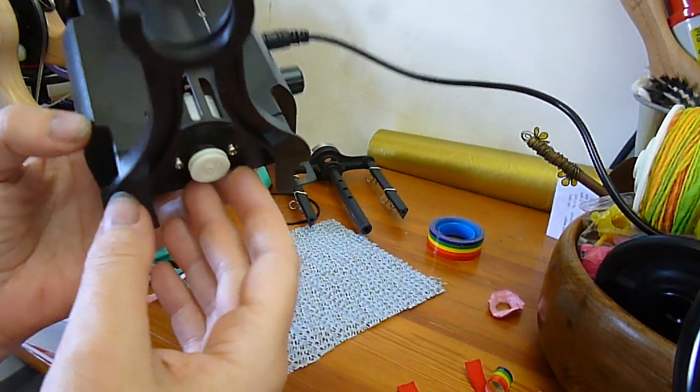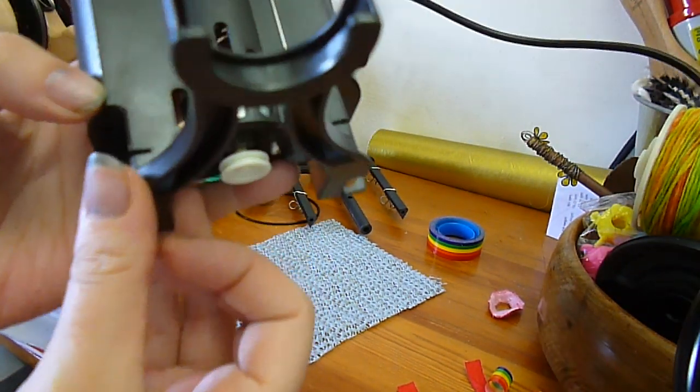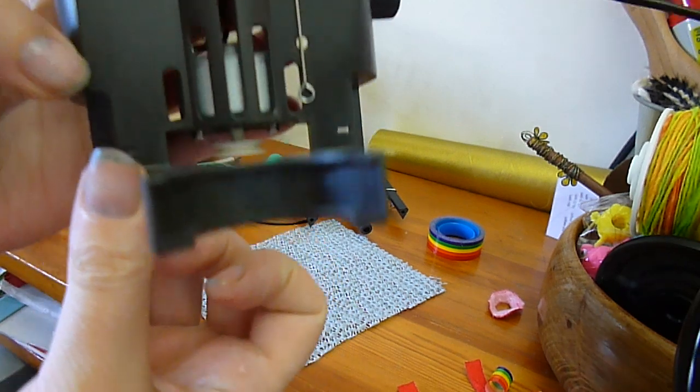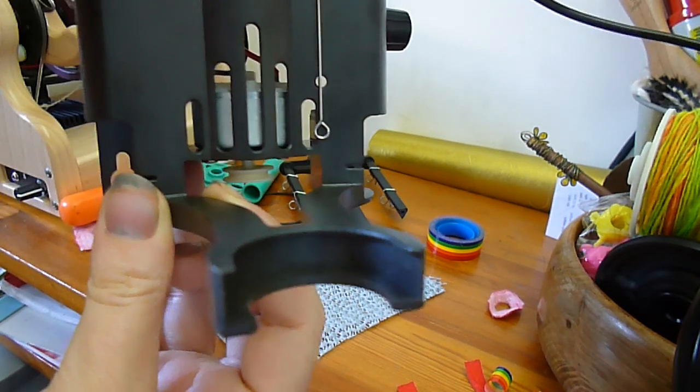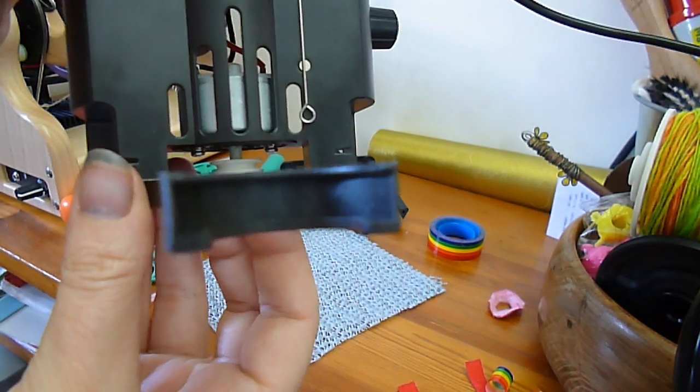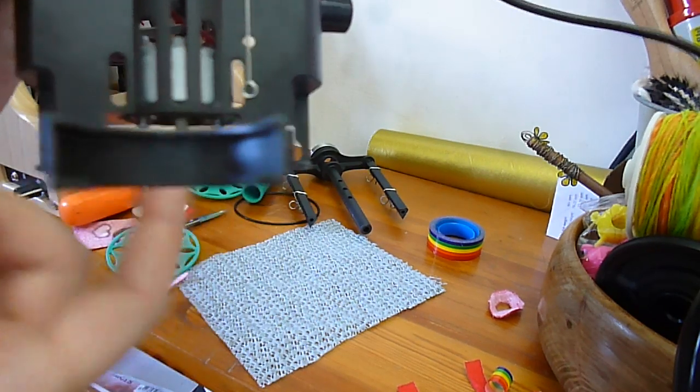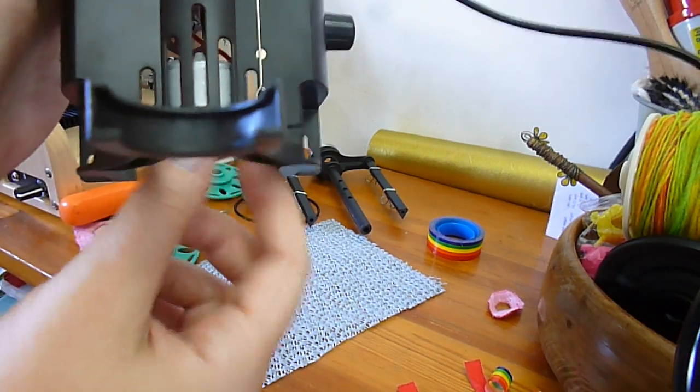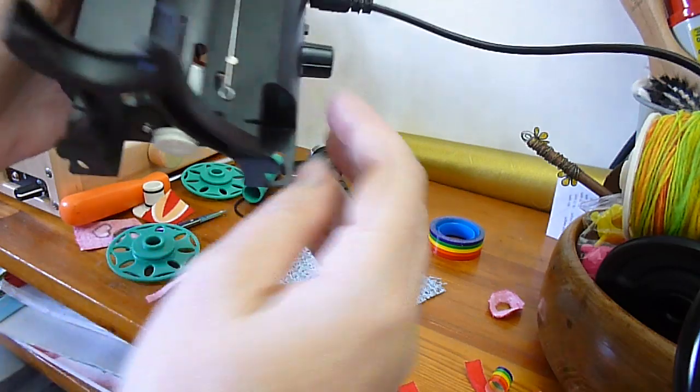I popped it off and wrapped the shaft in a bit of PTFE tape. Just PTFE tape round the shaft and over the end. Put the bobbin on, put the pulley on and now it's really really tight so I don't have to worry about that anymore.